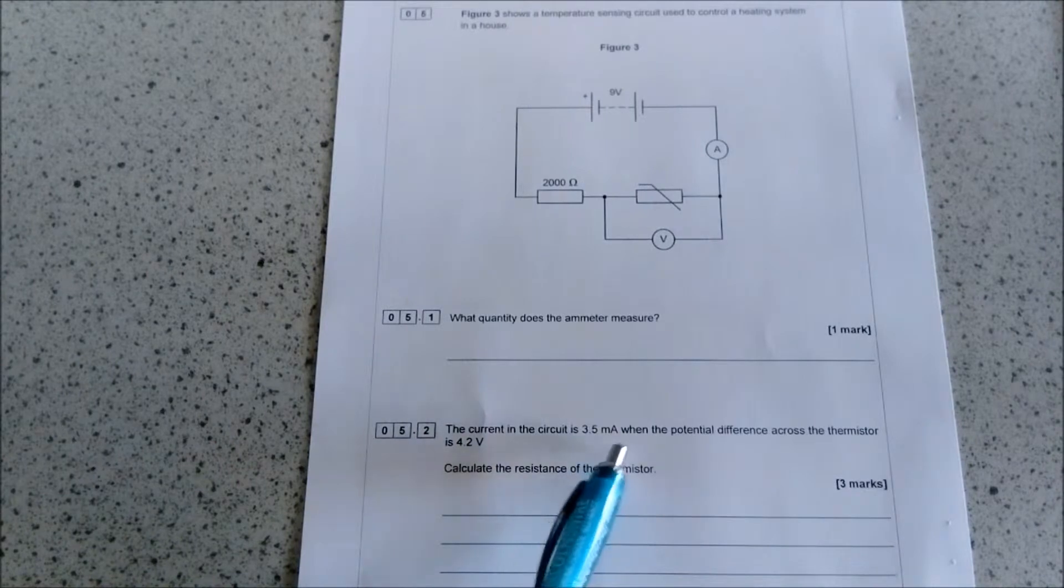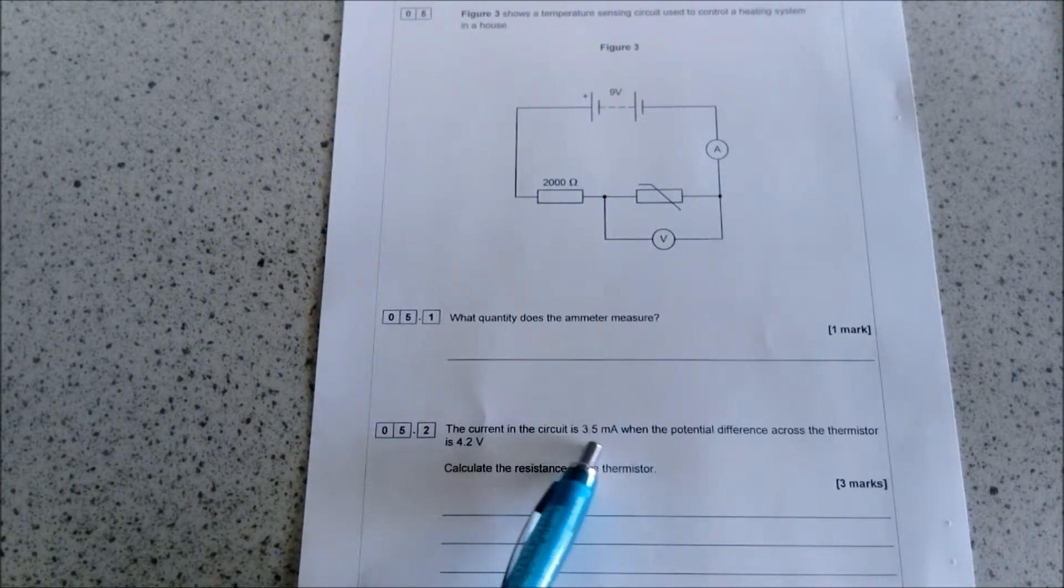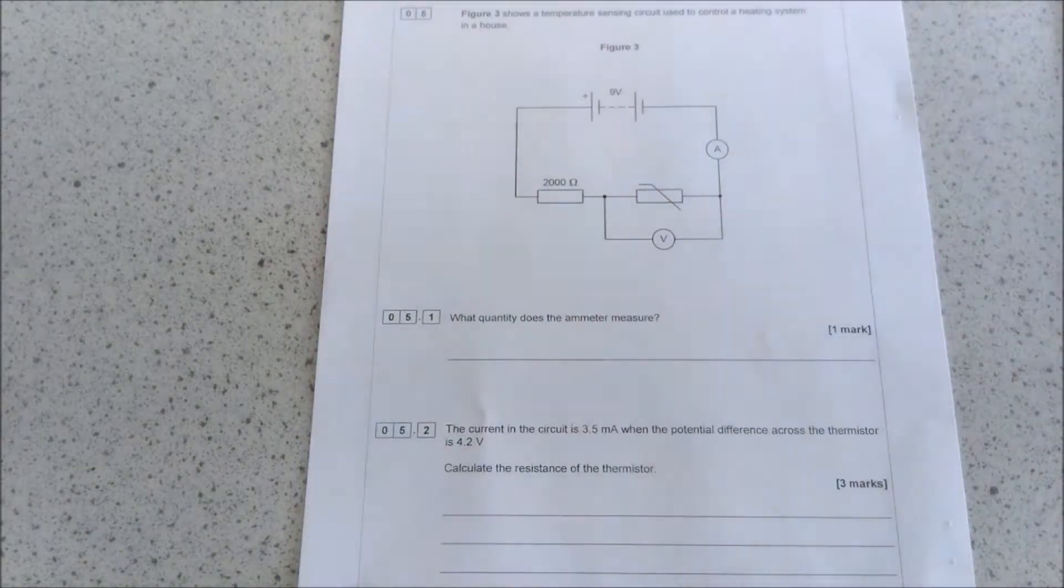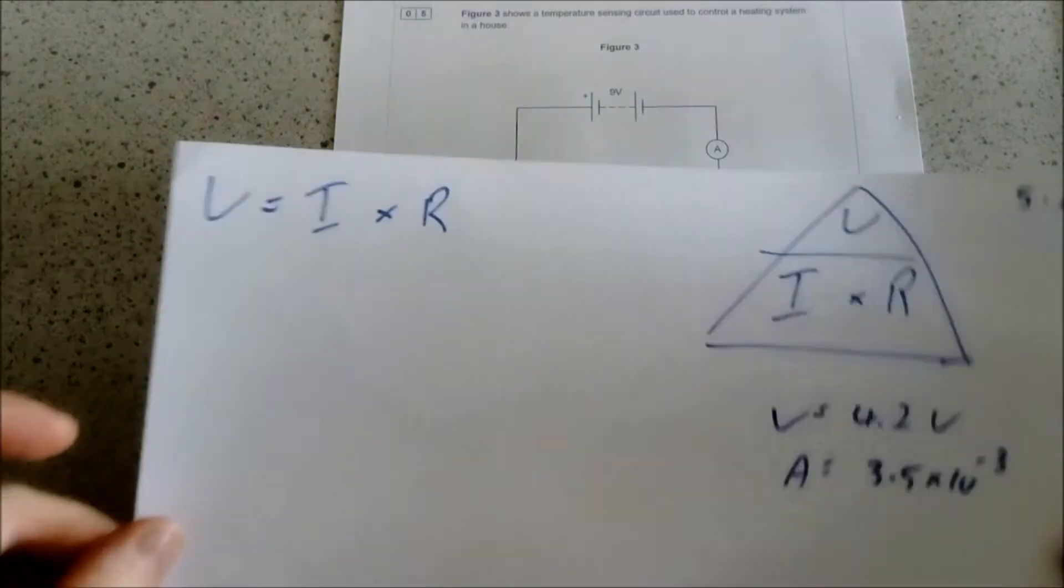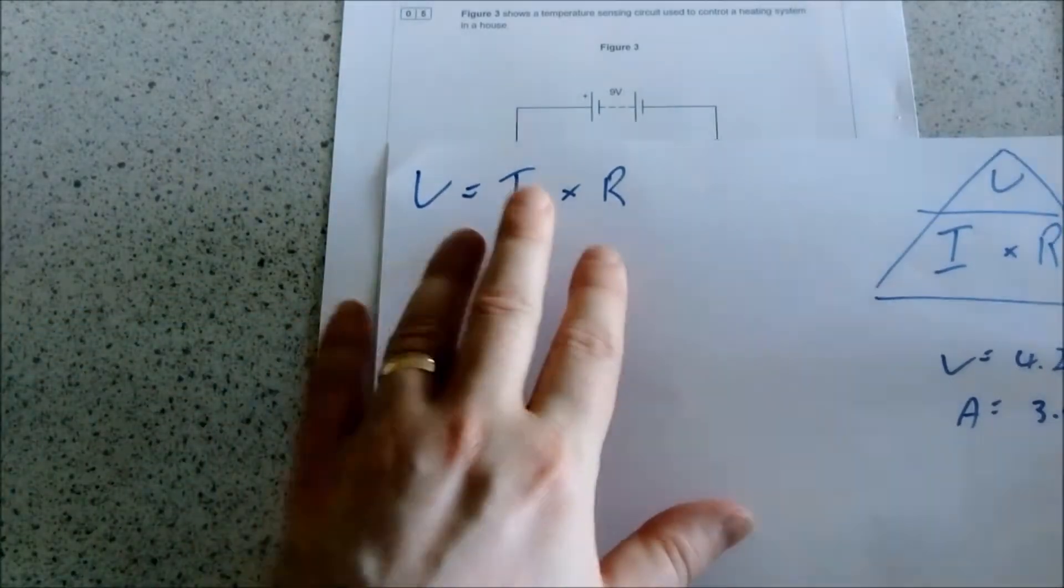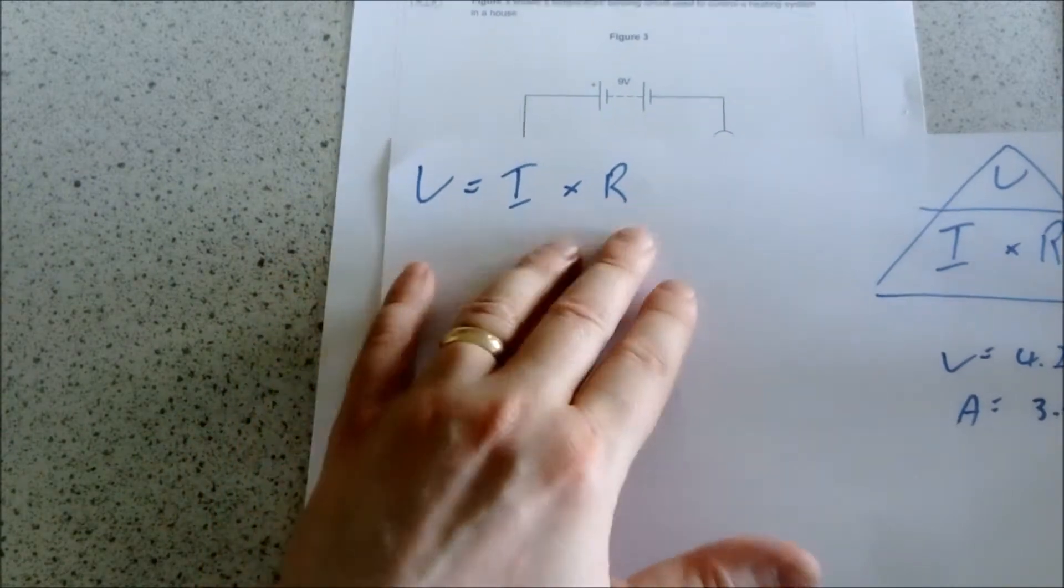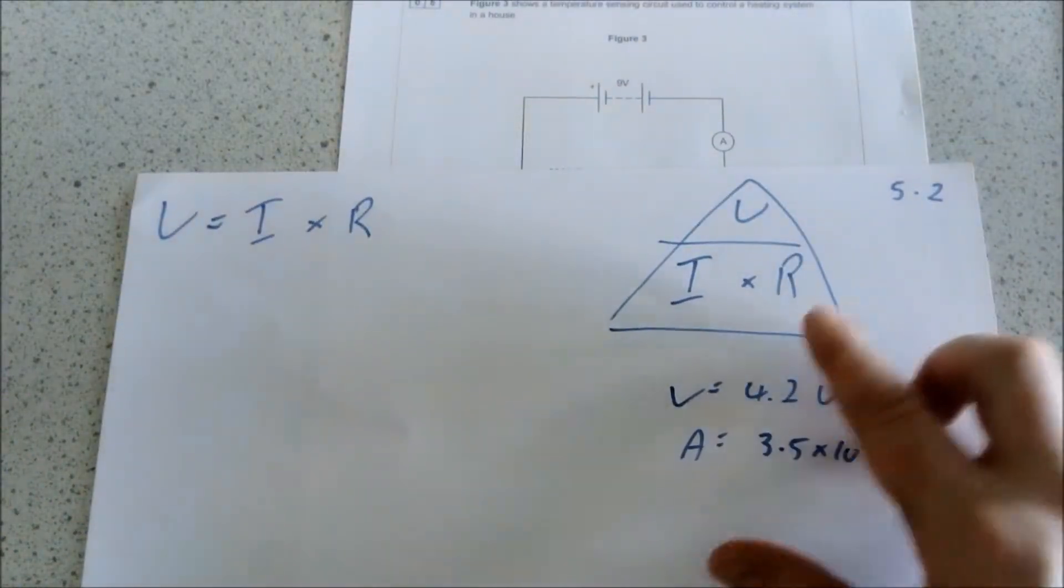The second part of this says that the current in the circuit is 3.5 milliamps - remember that stands for milliamps - when the potential difference across the thermistor is 4.2 volts. Calculate the resistance. There are a number of different bits that you need to remember for this.